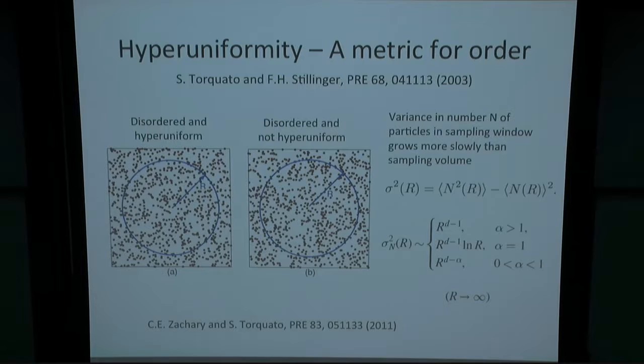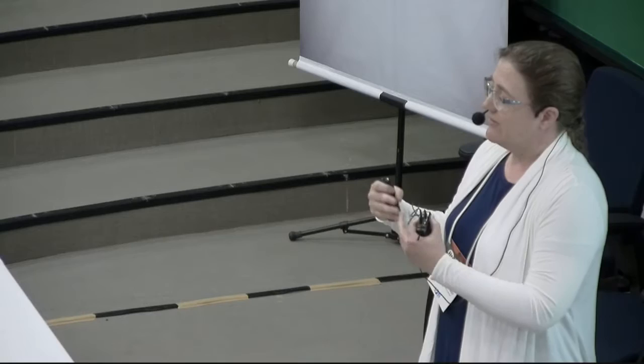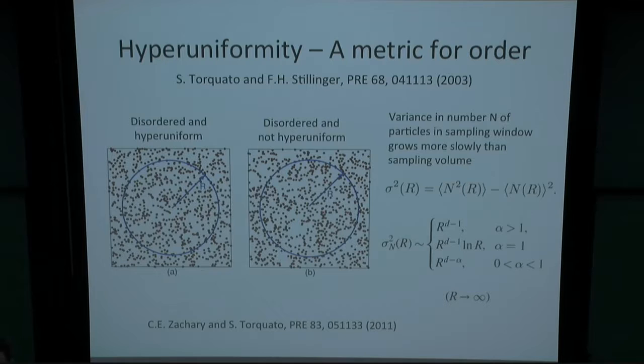Hyperuniformity is something that was introduced by Torquato and Stillinger in 2003. What they were looking for is a way to quantify disordered systems. We're already pretty good at telling apart different ordered systems — we can classify them into different lattices. But it's clear that there are different types of disordered systems, and how can you give a metric to tell one from the other? The hyperuniformity concept is actually quite simple. They defined it mathematically, and you can think about it in the following way.